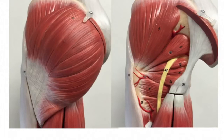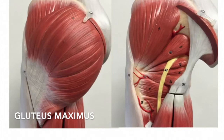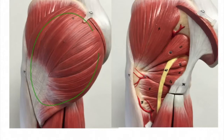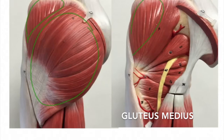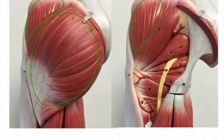This is a posterior lateral view of the left lower limb. In this view, you can see the gluteus maximus. Its origin is the ilium, sacrum, and coccyx, and its insertion is the iliotibial tract and the posterior femur. Its action is to extend and outward rotation of the femur. You can also see the gluteus medius. Its origin is the ilium, its insertion is the greater trochanter, and its action is abduction and medial rotation of the femur.